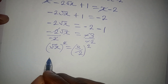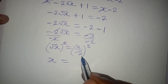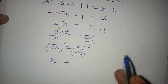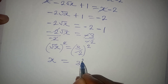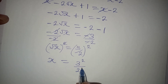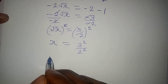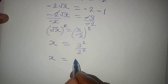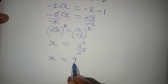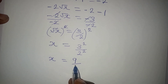Squaring both sides, this cancels the square root, and x equals 3 over 2, all squared. This is the same as 3 squared over 2 squared. From here, 3 squared is 9 and 2 squared is 4, so x equals 9 over 4.